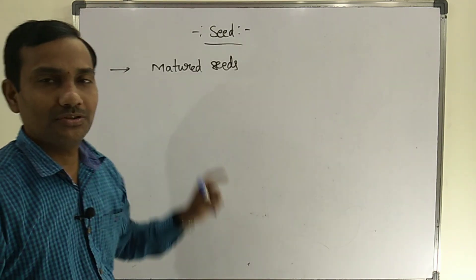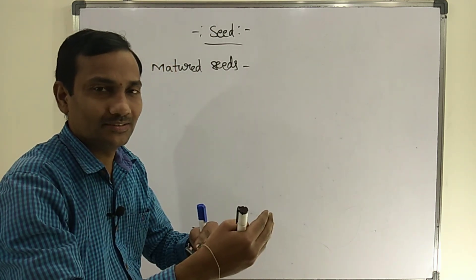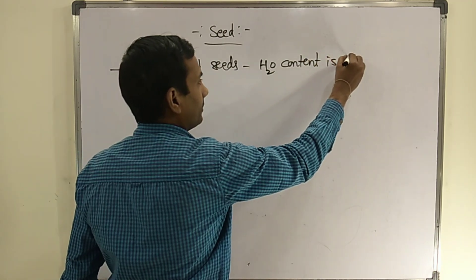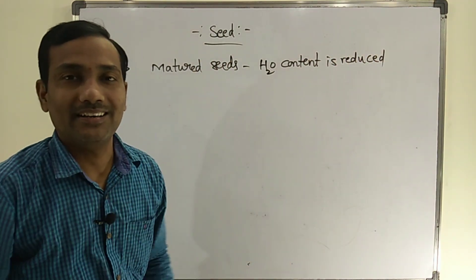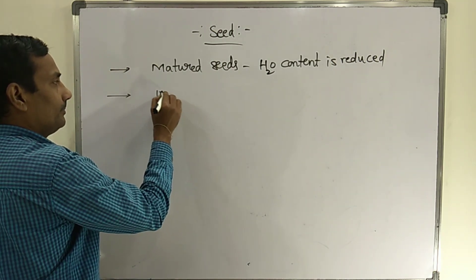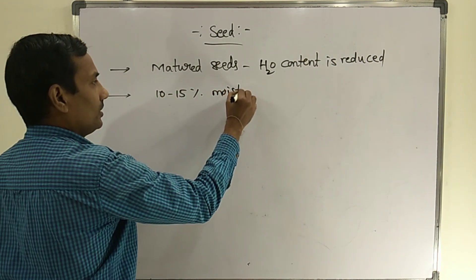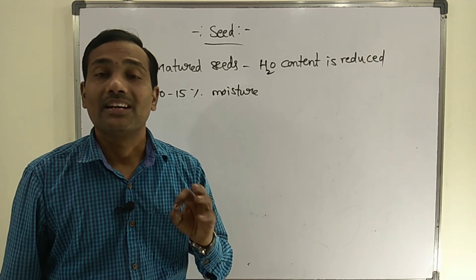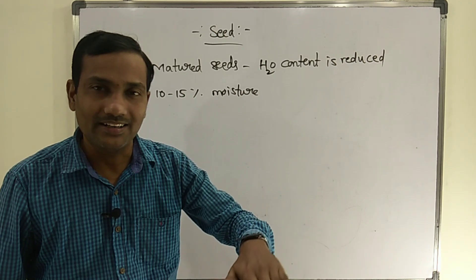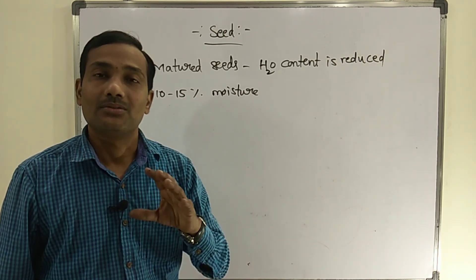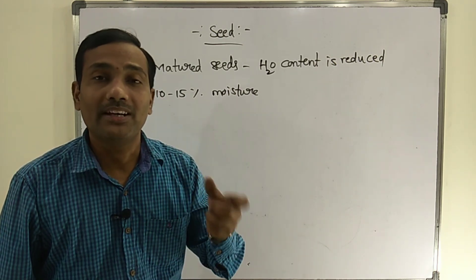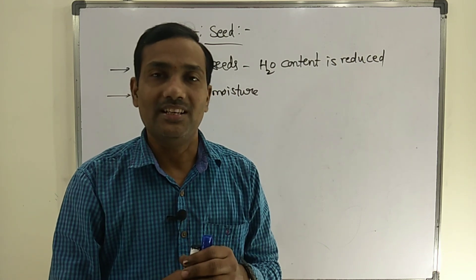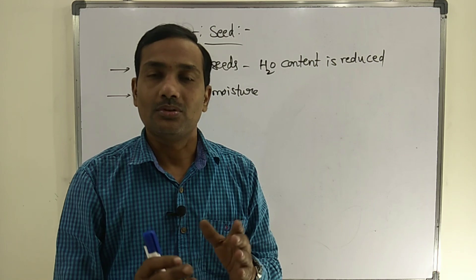At the time of maturation, the total water content of the seed is reduced. In a matured dry seed, only 10 to 15 percent of moisture will be present. As water content gradually reduces, the metabolic activities of the embryo slow down, and the entire seed enters an inactive stage called dormancy.